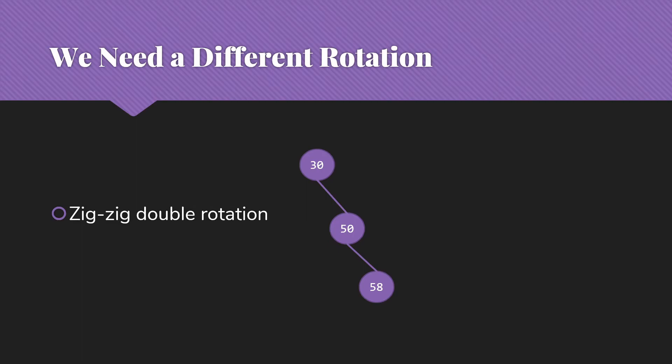Hence the distinction. Zigzag, we're going in two different directions. Zig-zig, we're going in just one direction. So we're going to rotate the three items the opposite way. So our 30, 50, 58 become 58, 50 to the left, 30 to the left.